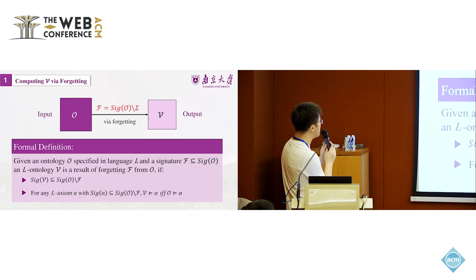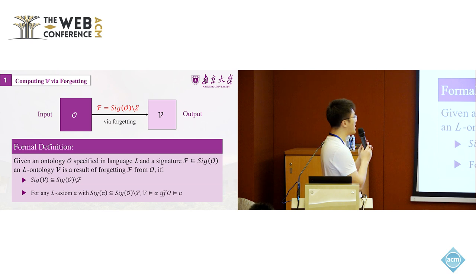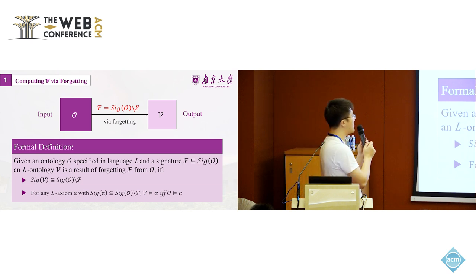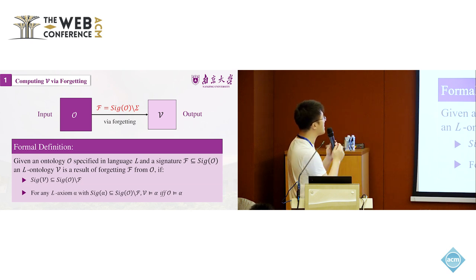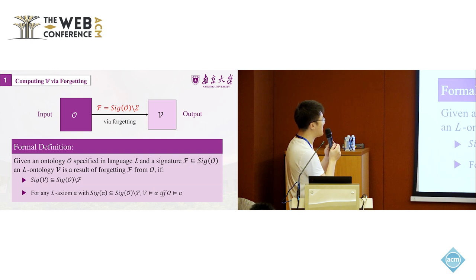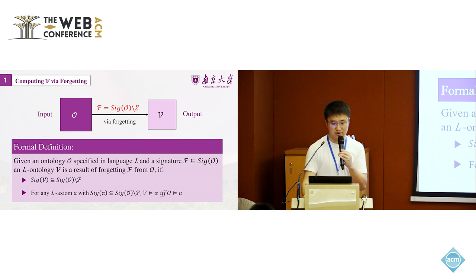In this work, we propose a method to compute the view of the original ontology via a technique called forgetting. This is the idea of how forgetting is working, given an input ontology and a signature sigma. We first compute the other signature, called F signature, or forgetting signature, which is the signature from the original ontology minus the specified sigma. Then we use the technique of forgetting to generate the output.